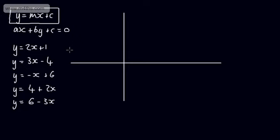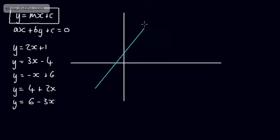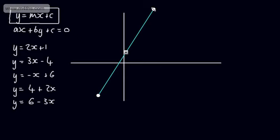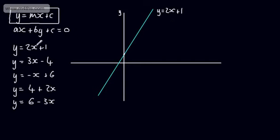Let's sketch these. For y = 2x + 1, the gradient is 2 and the y-intercept is (0, 1). It crosses the x-axis when y = 0, so 2x + 1 = 0, giving x = -1/2. So we label the points (-1/2, 0) and (0, 1) and draw the line through them.